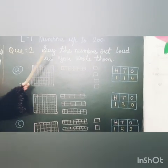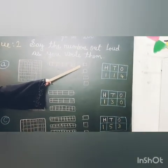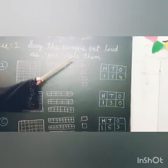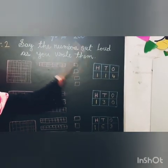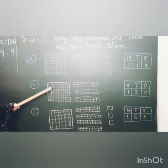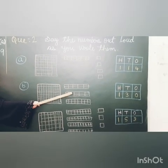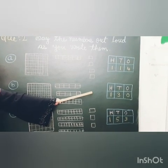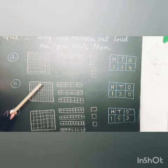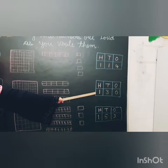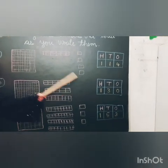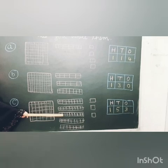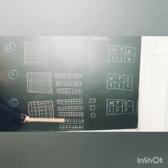100, 1 ten, 1 2 3 4, four 1s. We write 140. Part B: 100, 1 2 3, three 10s. We write 130.